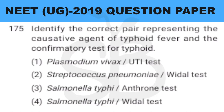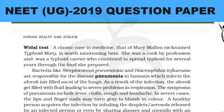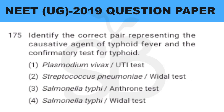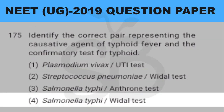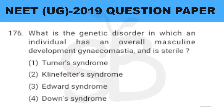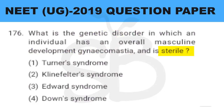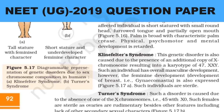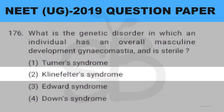Question number 176: what is the genetic disorder in which an individual has overall masculine development, gynecomastia, and is sterile? This is from plus 2 biology chapter on principles of inheritance and variation, page number 91. So the correct answer is option 2: Klinefelter syndrome.